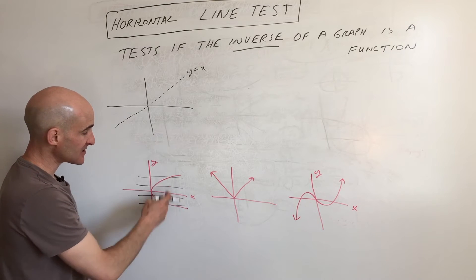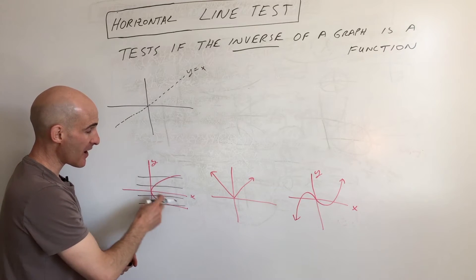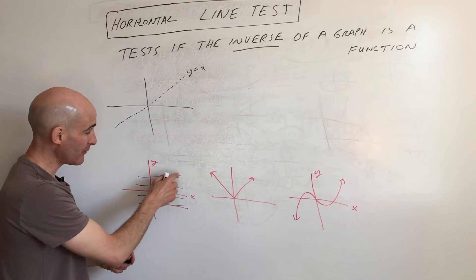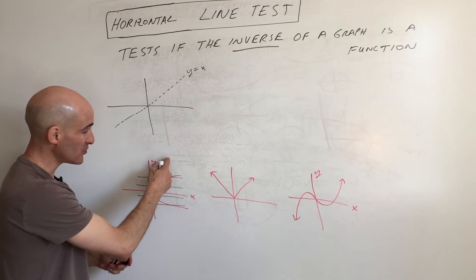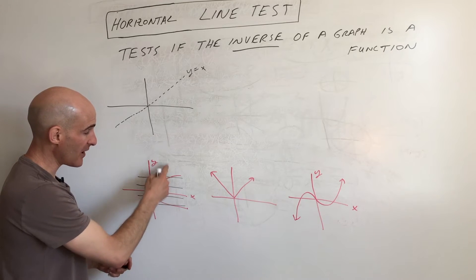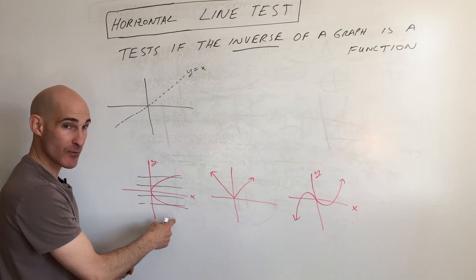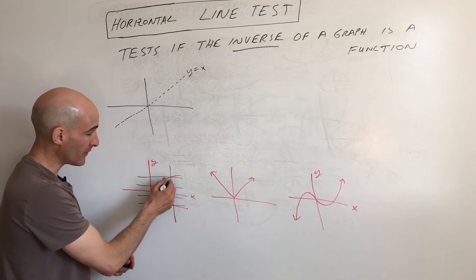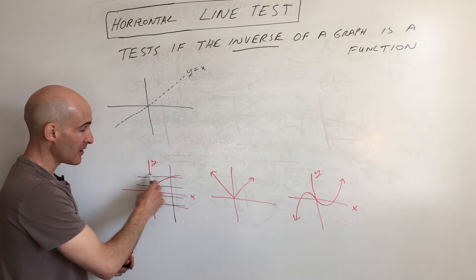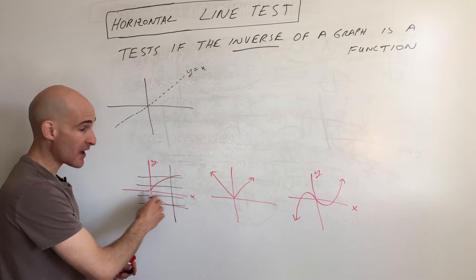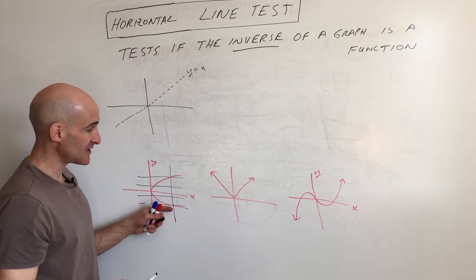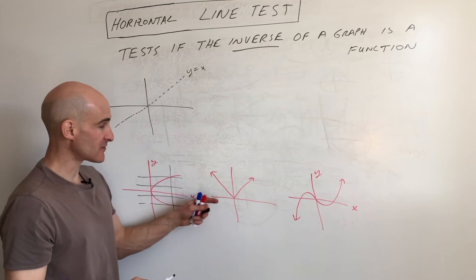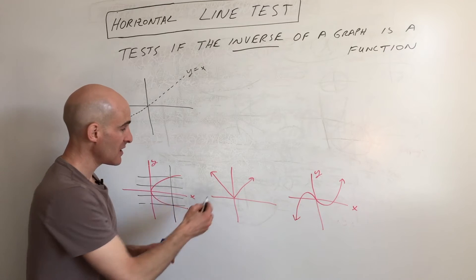The vertical line test tests to see if this graph itself is a function, and you can see that it would fail — it would be crossing at more than one point. But when you draw the horizontal line test, it tests to see if the inverse of this graph is a function, which it is.